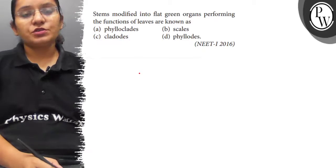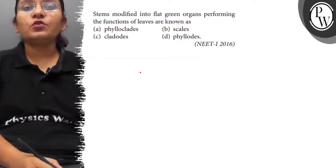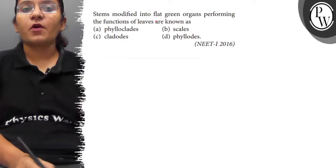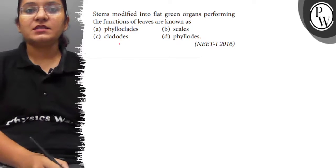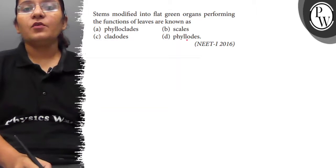Hello students, the question is: stem modified into flat green organ performing the function of leaves are known as A. phylloclades, B. scales, C. cladodes, and D. phyllodes.